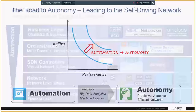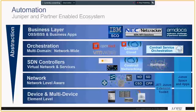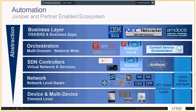So what is Juniper bringing to the table to create an ecosystem for automation? At the very bottom level on this slide, we talk about our devices, which could be both physical and virtualized — routers, switches, and optical gear, as well as security appliances. Some of them are virtualized, for example the Virtual SRX and the Virtual MX. All of those appliances are managed at the device level.